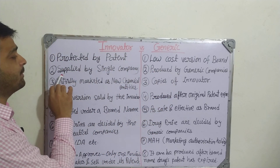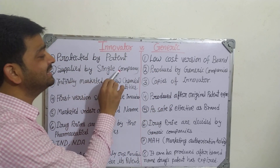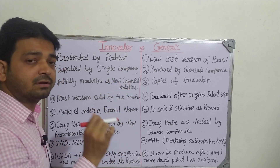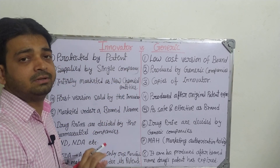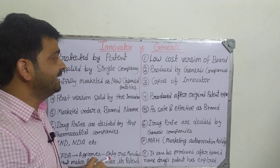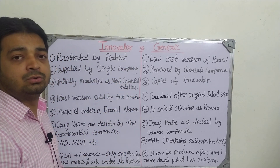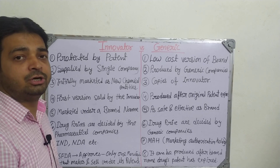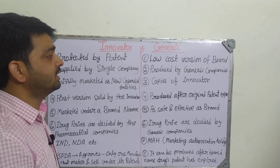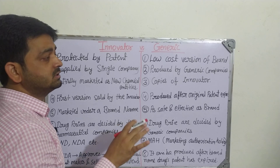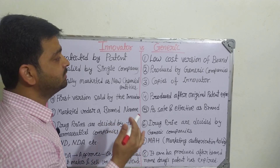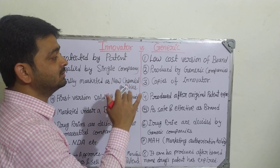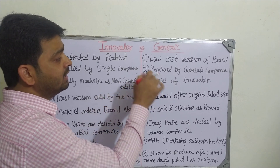Second point: the innovator drug is supplied by a single company. The company or group which has patented it is going to have the sole authority to produce it. Other people cannot produce it because it is their discovery.